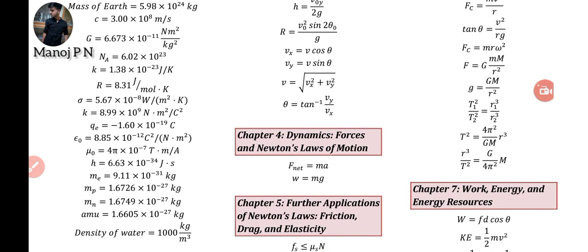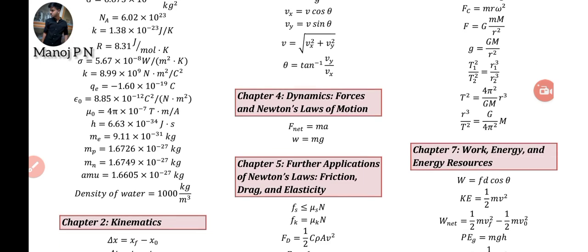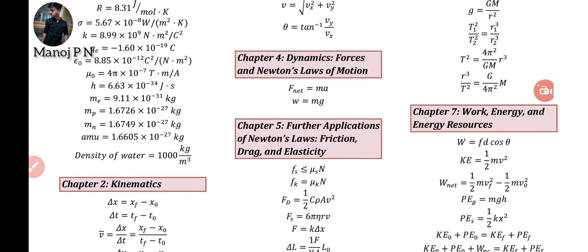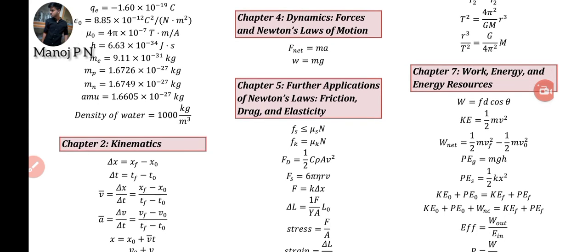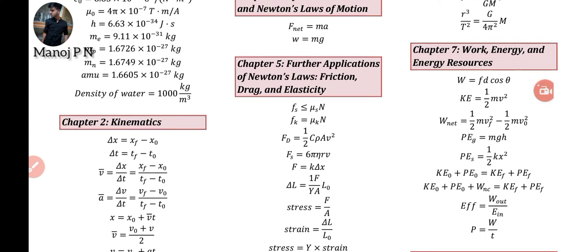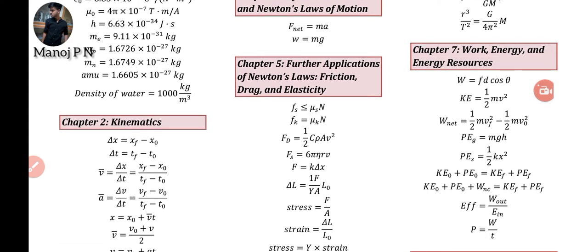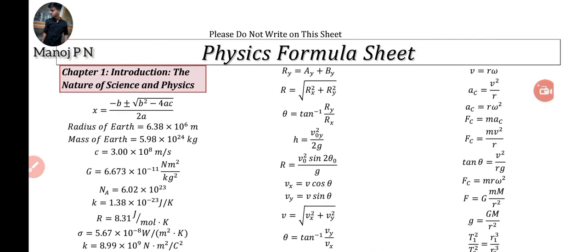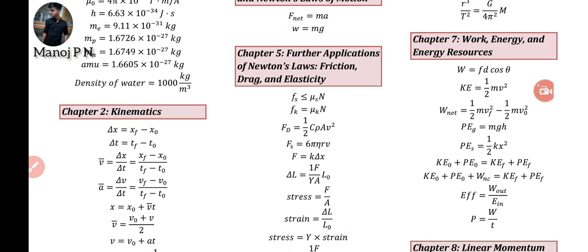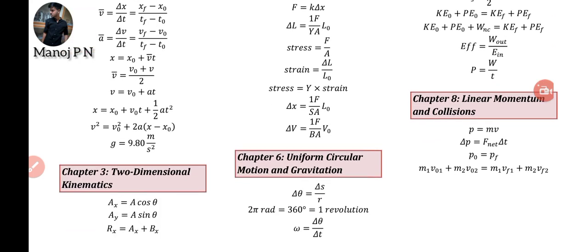Mass of atom and k, sigma value, k value, epsilon value, mu naught value, h value, m_e, m_p, m_n, and amu atomic mass unit. All these things have been collected and not only that, we have been collected all the formulas which is related to all the topics over here in this handbook.